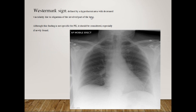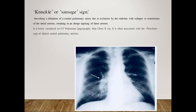Westermark's sign is defined by a hyperlucent area with decreased vascularity due to oligemia of the affected part of the lung. Although this finding is not specific, it should be considered. Here we can see the relative hyperlucency of the lung compared to the other side and decreased lung markings comparatively. Knuckle sign describes dilation of the central pulmonary artery due to occlusion by the embolus, with collapse or constriction of the distal arteries presenting as abrupt tapering. Here we can see dilation of the central pulmonary artery with sudden tapering of the distal arteries.